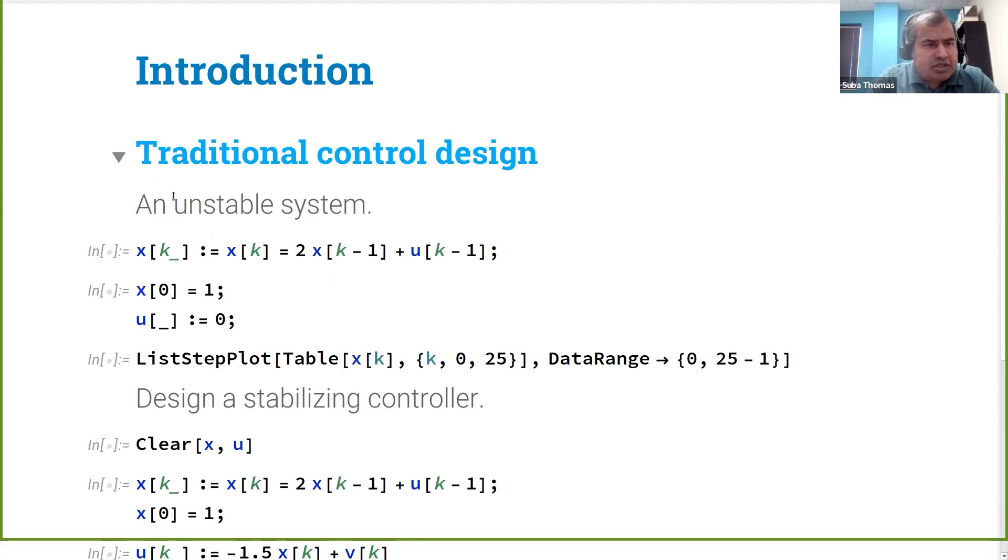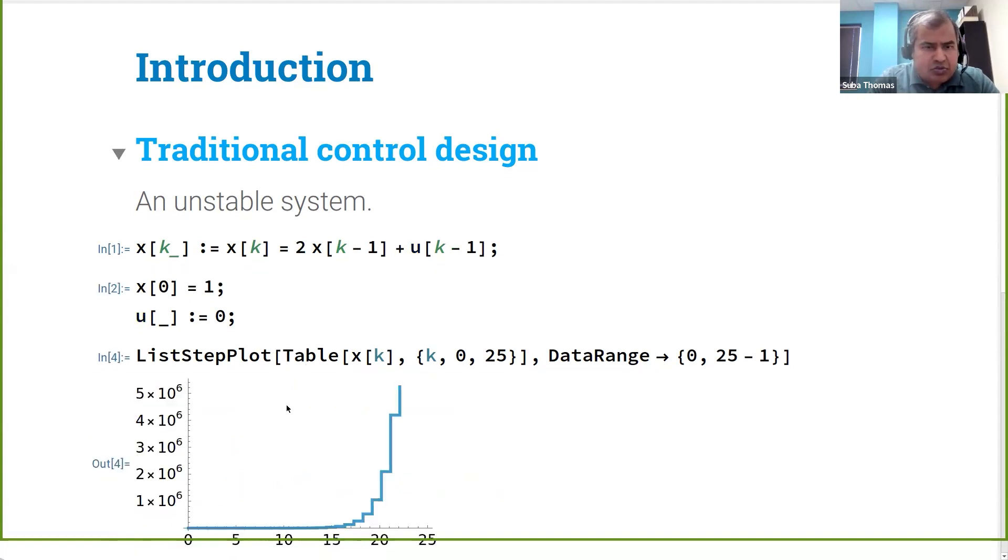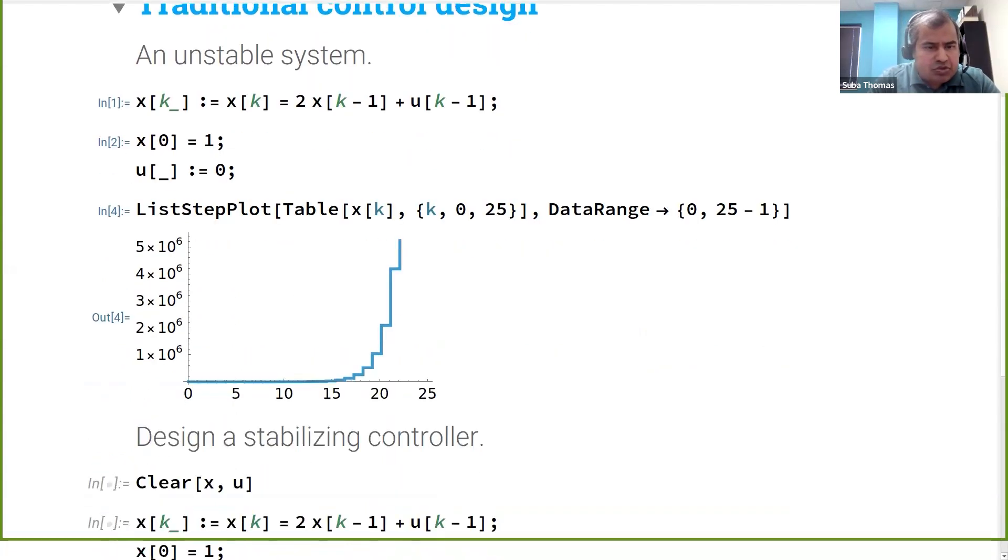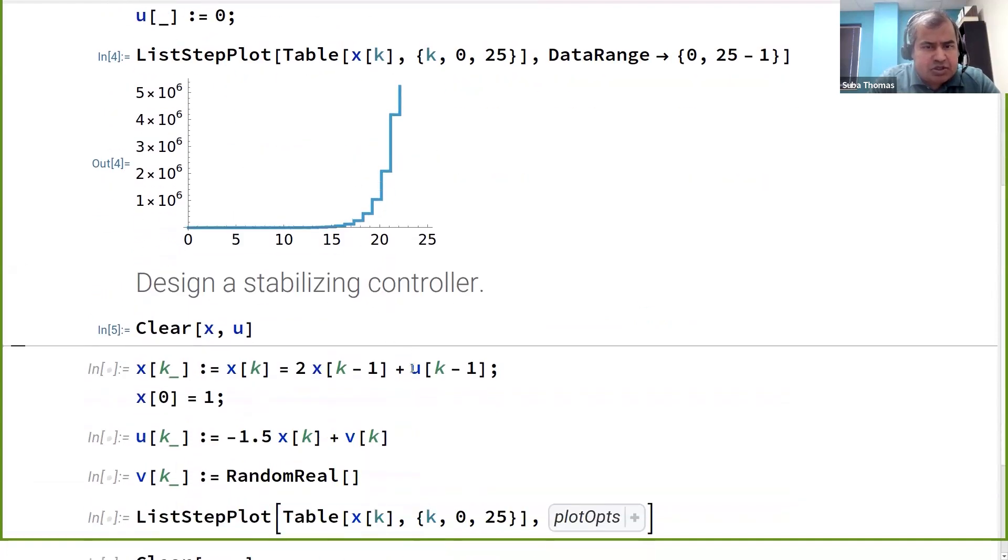Let's first look at how traditional control design is typically done. Here I have a very simple example of an unstable system. It has one state and one input, and the important thing here is I know the model of the system. Because this coefficient is 2, the system is going to blow up, and we can see that if you simulate it, its response constantly increases.